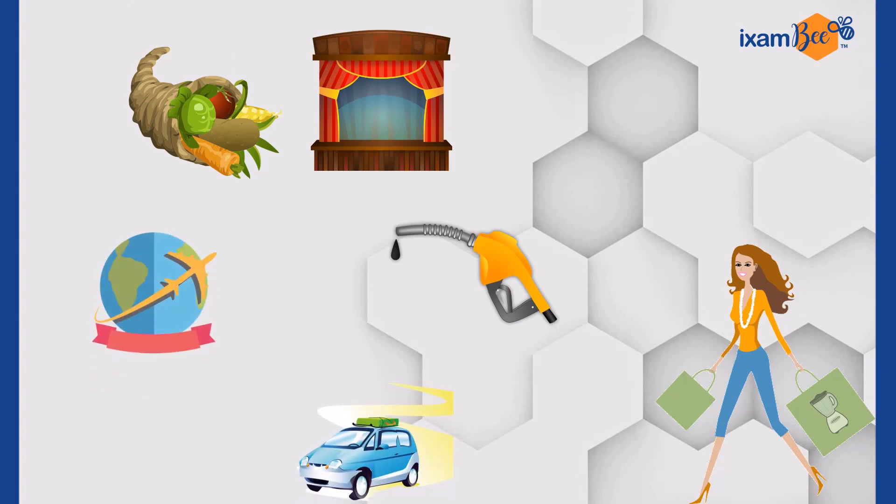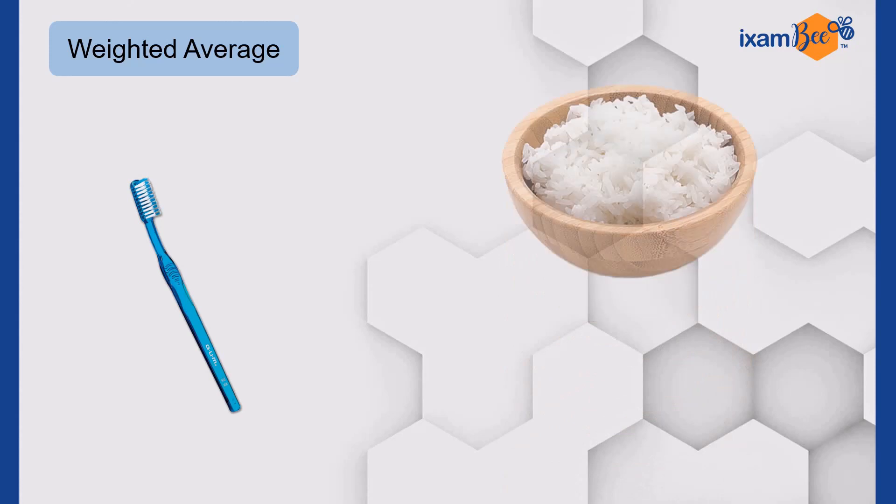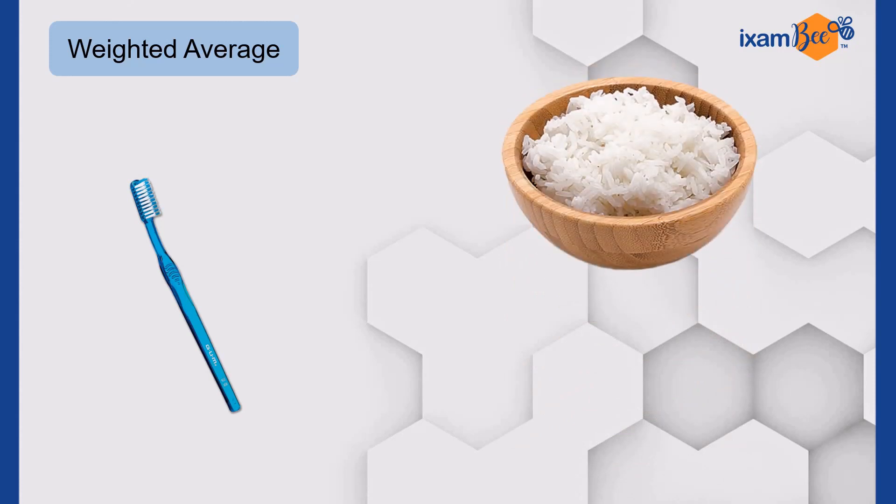Please remember that we take weighted average of the price while counting CPI. Weighted average simply means while counting CPI, different products carry different weightage. For example, the price changes in a toothbrush will not impact as daily as the price changes in rice. I hope you got my point. So, different products carry different weightages in CPI.